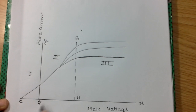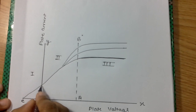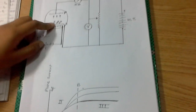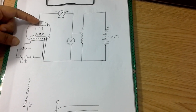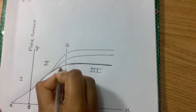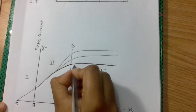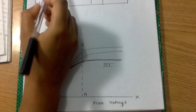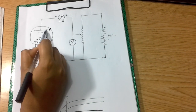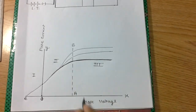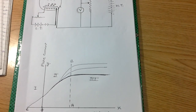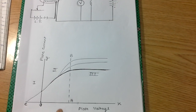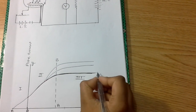In the second region O to A, electrons are emitted by the cathode, and on increasing the plate voltage more and more electrons reach the plate. As a result, the plate current increases. But when the plate voltage is high enough such that all electrons emitted by the cathode reach the plate, then increasing the plate voltage further produces no increase in current — we have a saturated current. In this case, current can be increased only by increasing the temperature of the cathode.